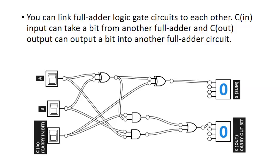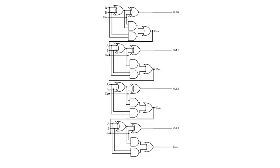You can link full adder logic gate circuits to each other. CIN input can take a bit from another full adder and COUT output can output a bit into another full adder circuit. The ALU can link these logic gate circuits together to do addition on multiple bits. And if you look at our diagram here, you notice that the C output of one of the full adders is going into the C input of another full adder circuit.